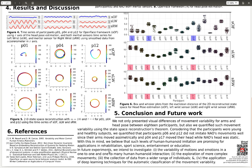In future experiments, we intend to investigate: first, the variability of motions and emotions in one-to-one and one-to-many human-humanoid interactions; secondly, the exploration of more complex movements; thirdly, the collection of data from a wider range of individuals; fourthly, the application of deep learning techniques for the automatic classification of the movement variability.